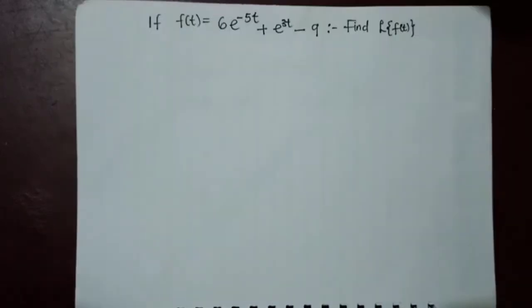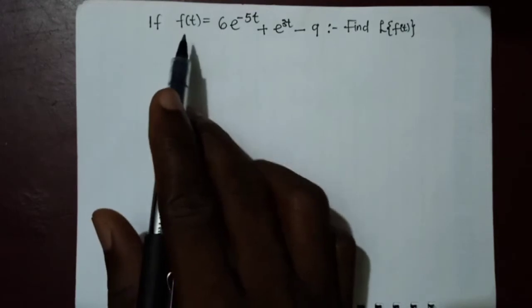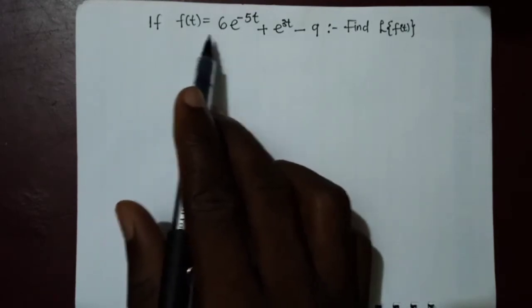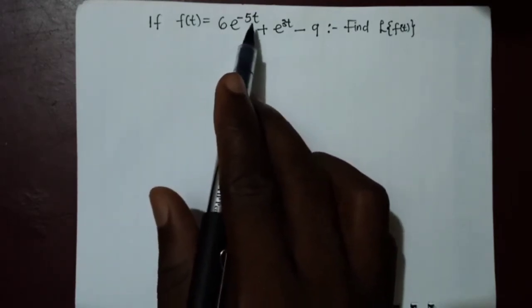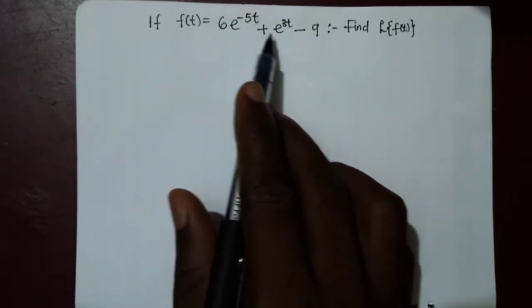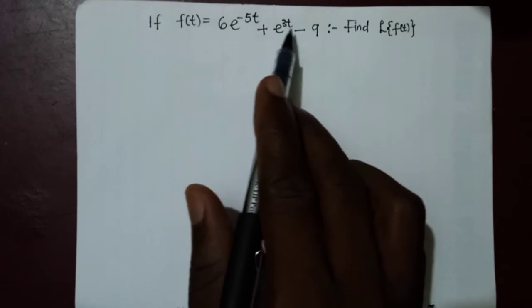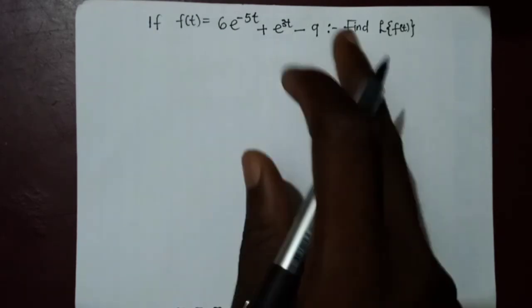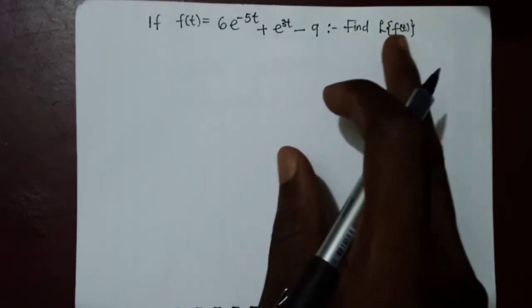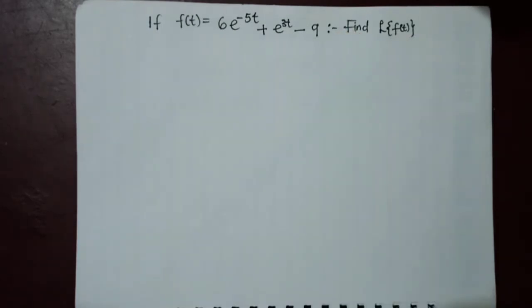The first problem: we are given that f(t) = 6e^(−5t) + e^(3t) − 9. Find the Laplace transform of this function.